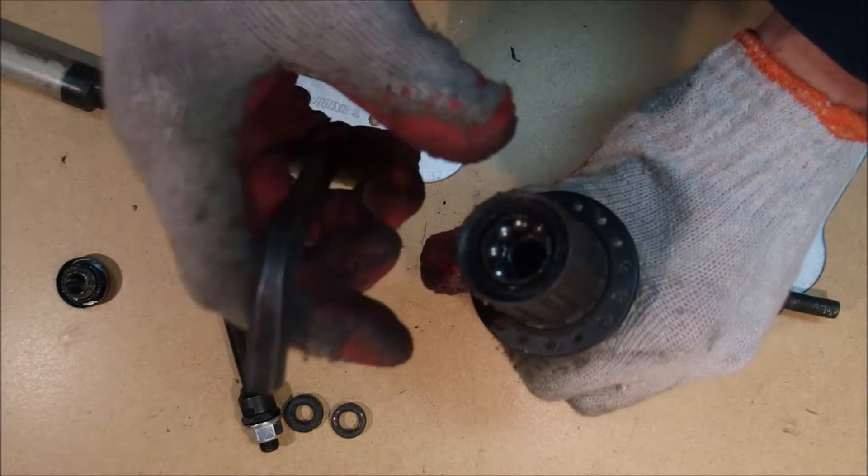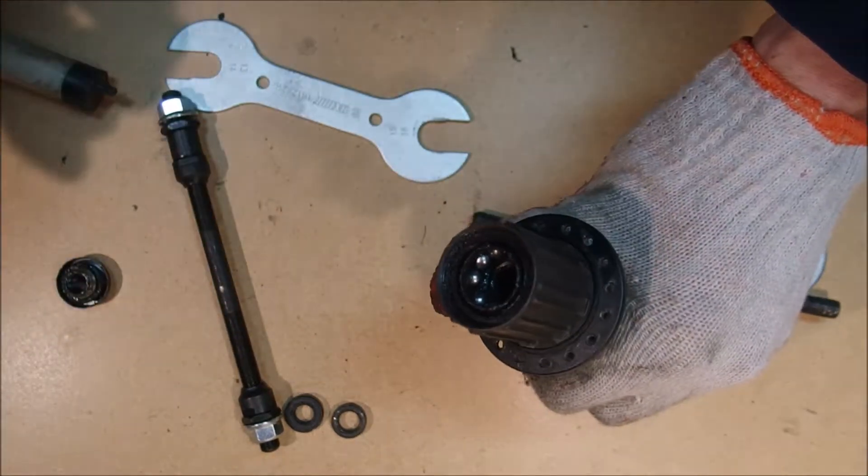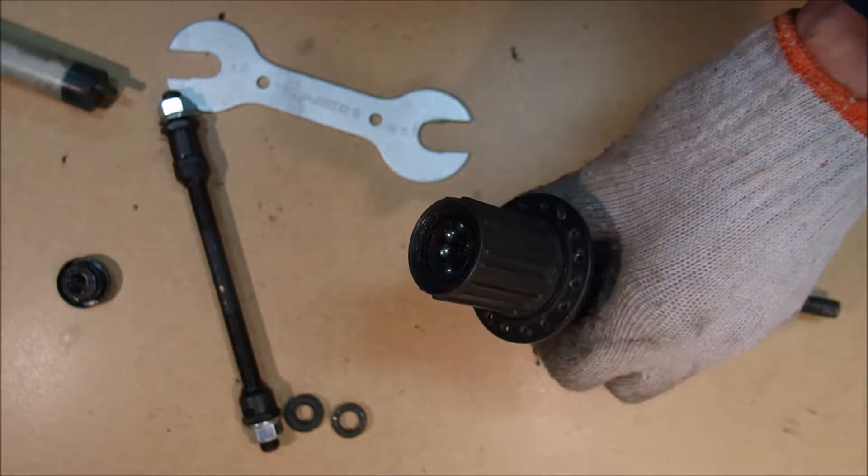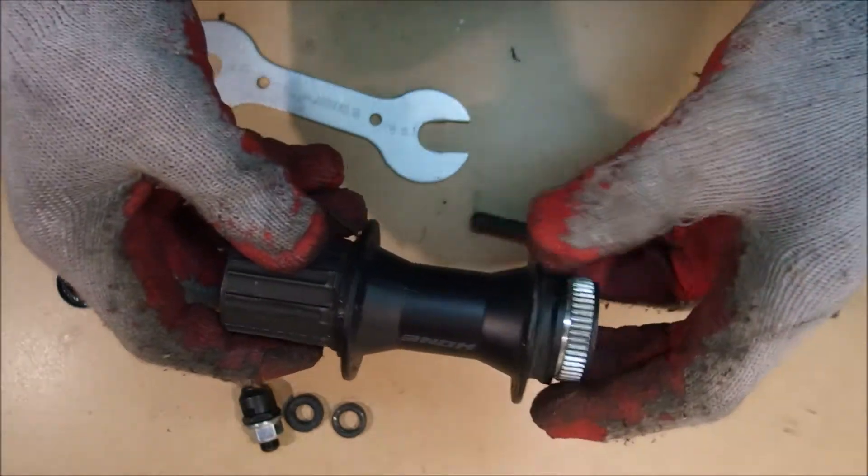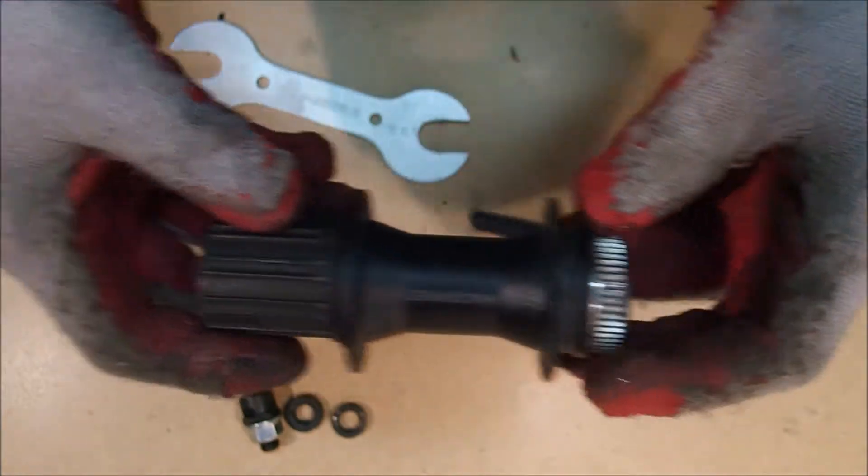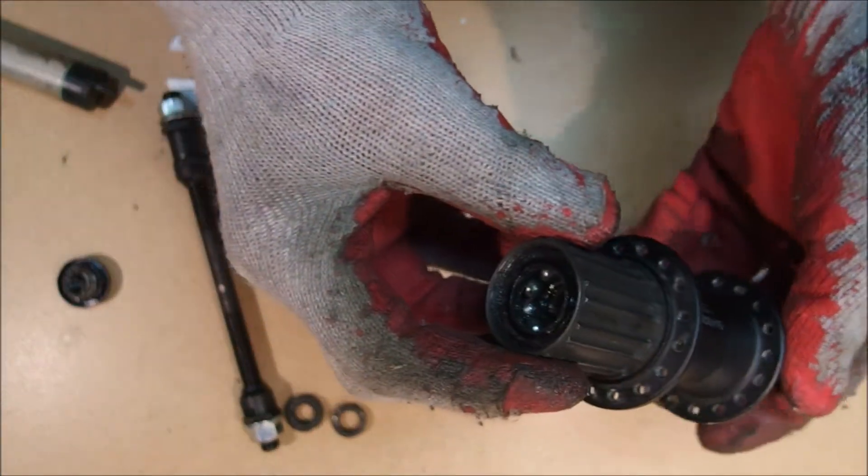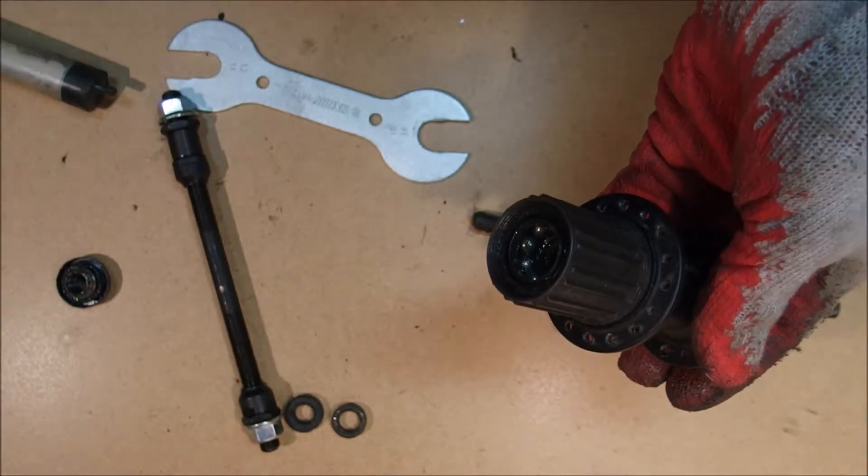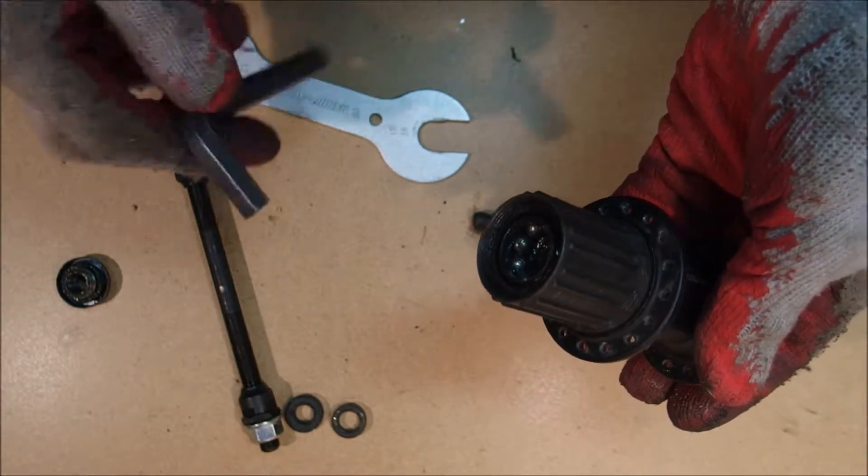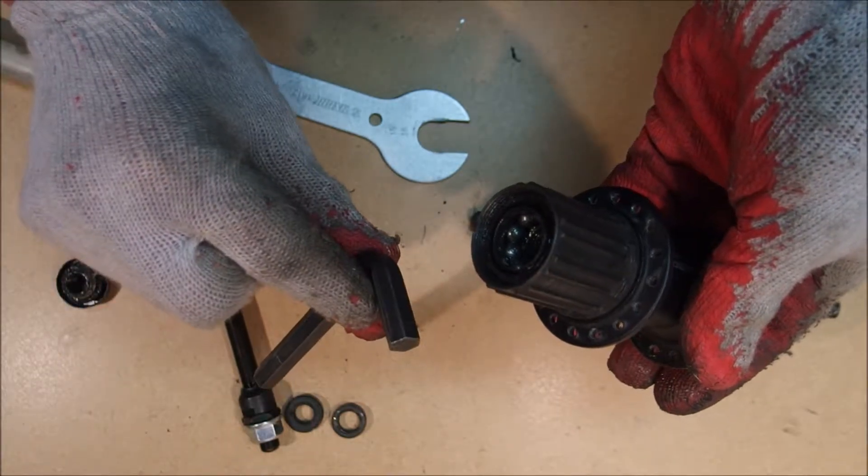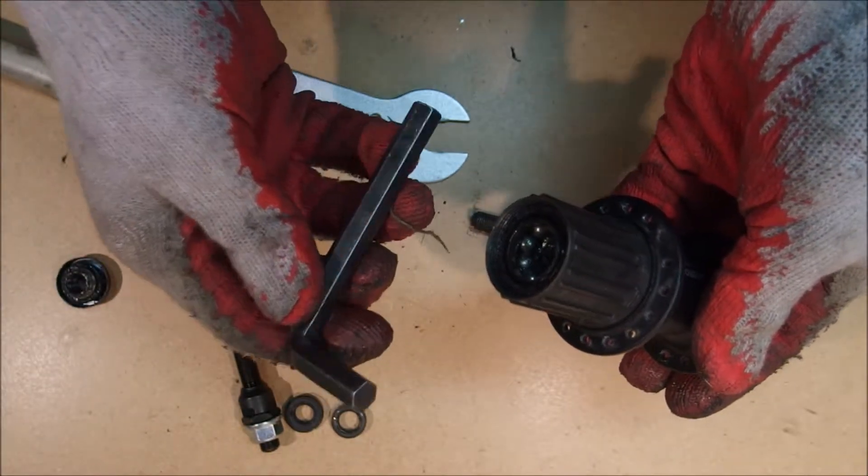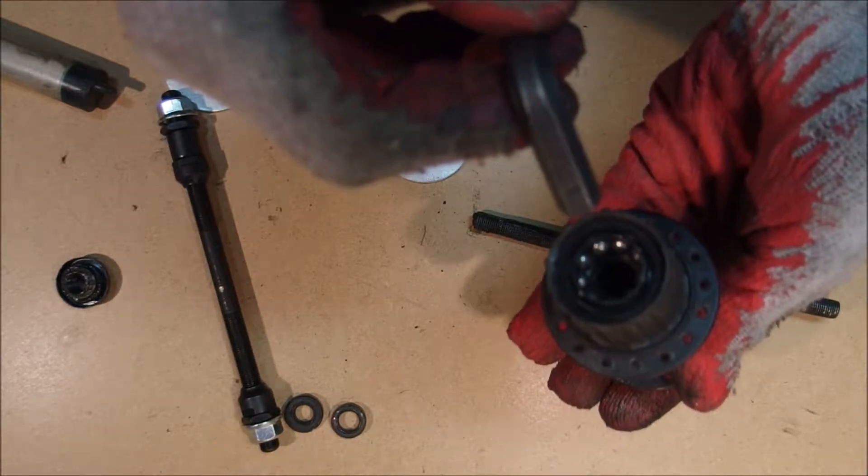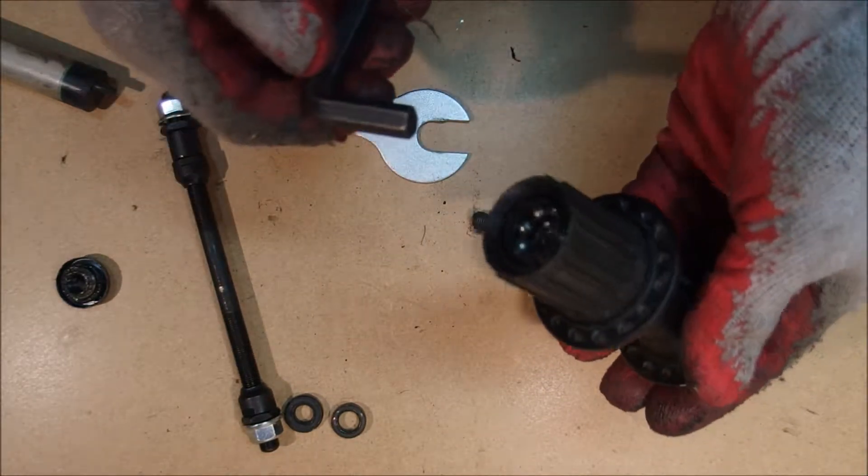Newer Shimano hubs, those which accept 12mm through axles and 15mm through axles, which are going to be standardized soon, although internal diameter of those is 15mm. Anyway, if you're using a newer hub, then instead of this wrench you're going to be using a fairly exotic 15mm Allen wrench. And unfortunately, those two types of hubs are incompatible.